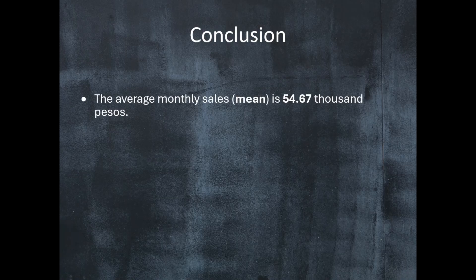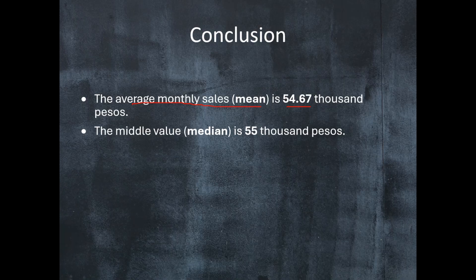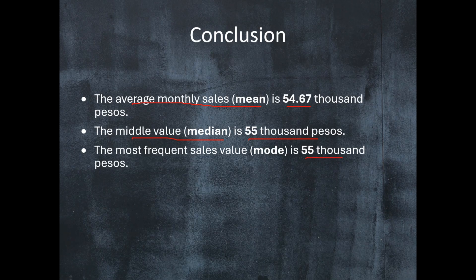We can say that the average monthly sales or mean is 54.67 thousand pesos. We can also say that the middle value or median is 55,000 pesos, and the most frequent sales value or mode is 55,000 pesos.